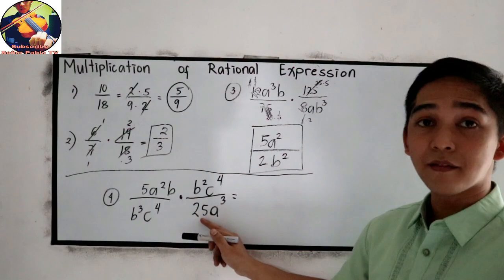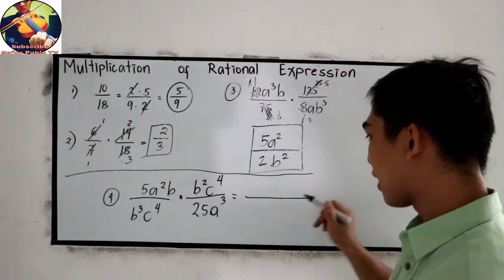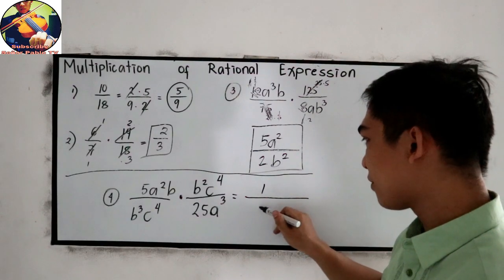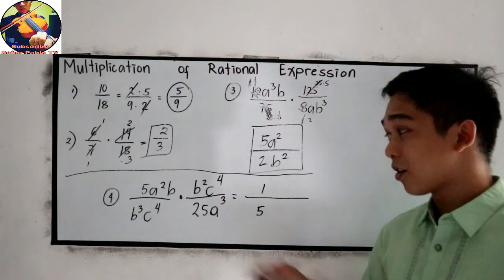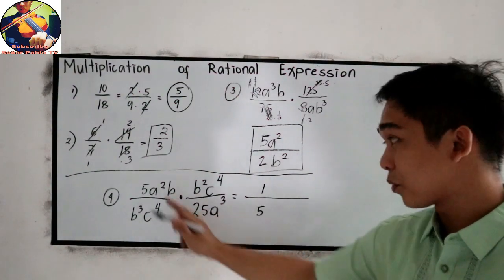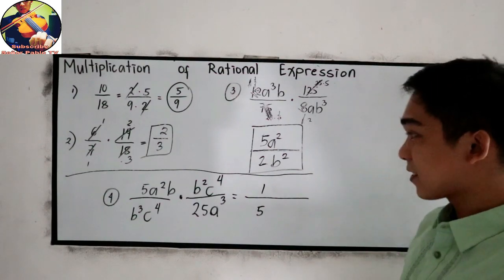5 and 25, common factor is 5. That will become 1 over 5. Because 25 is 5 times 5, so we can cancel 5 and 5 in this number.